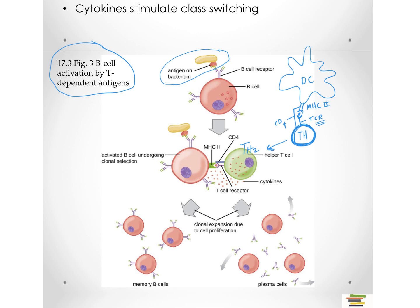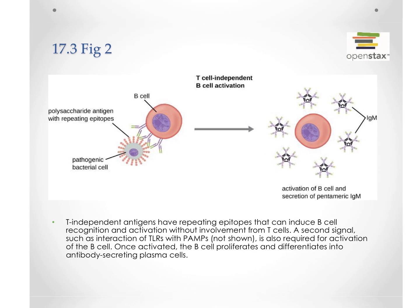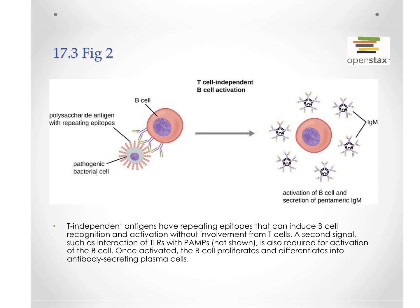That T helper cell will then differentiate into a T helper 2 cell. Once the B cell has presented that antigen by MHC class 2, the activated helper T cell, when it recognizes that same epitope of antigen, will secrete cytokines, which is an additional signal that causes the B cell to activate. Then it's going to differentiate into a plasma cell, make antibodies — starting with IgM antibodies — and will also make some memory cells.